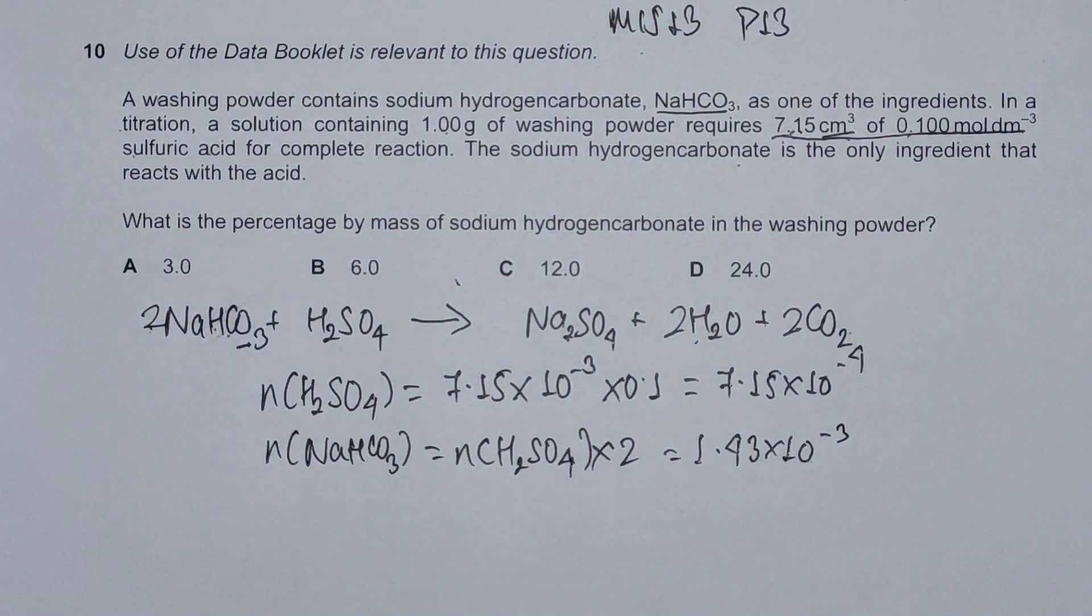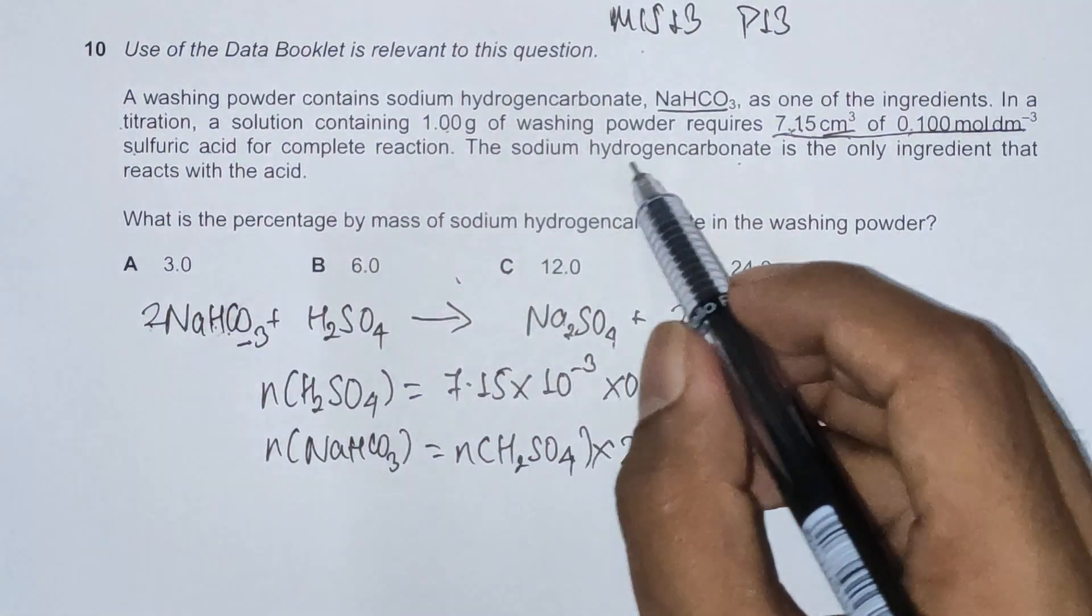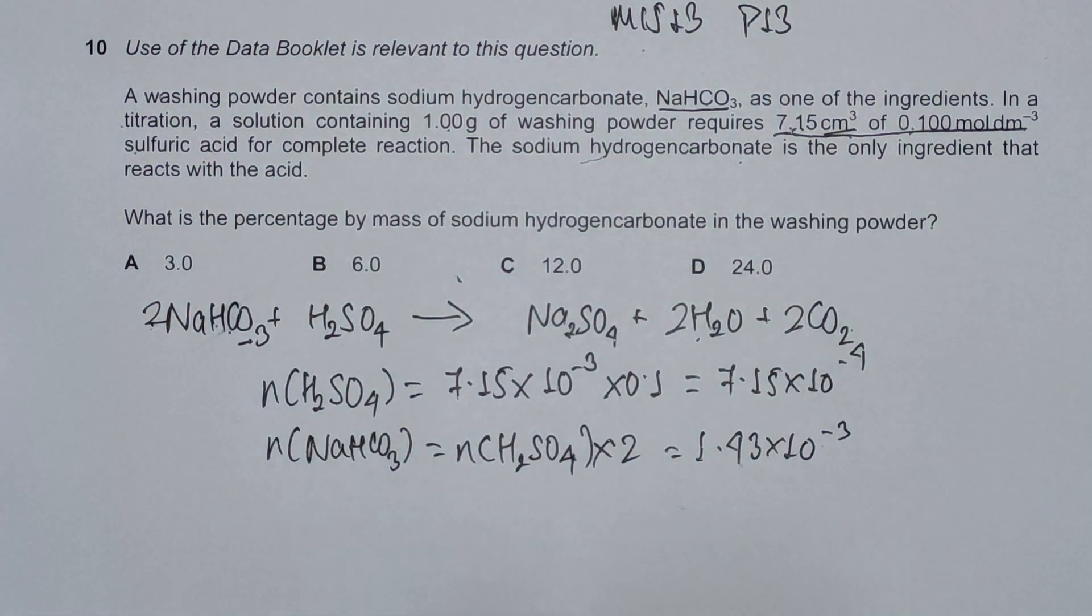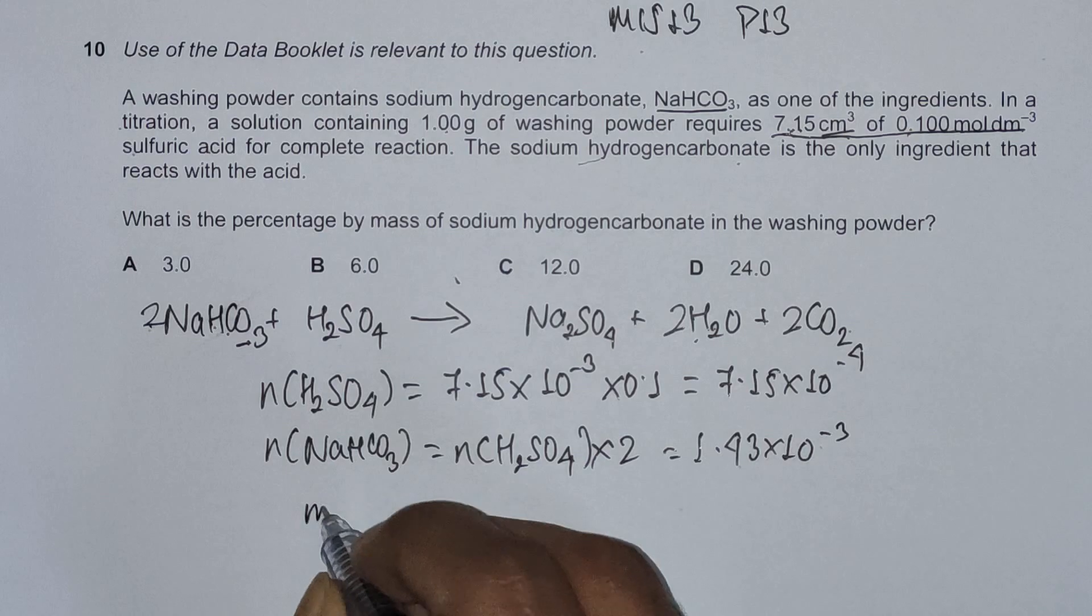The next step is to find out the mass of sodium hydrogen carbonate that has reacted, because the question states NaHCO3 is the only ingredient in the washing powder that reacts with sulfuric acid.